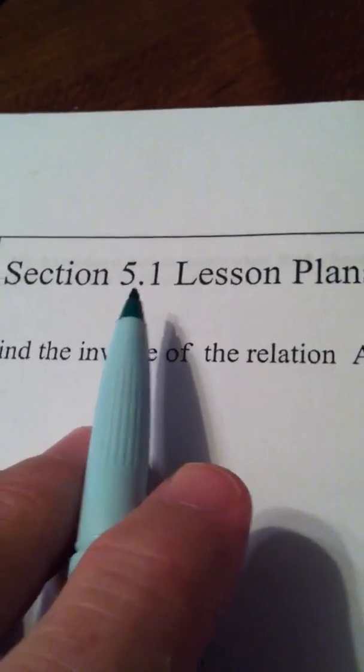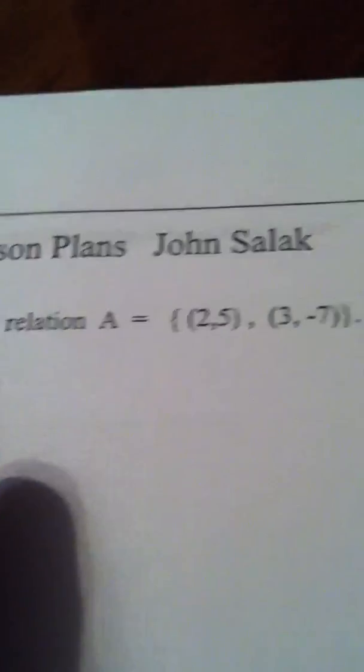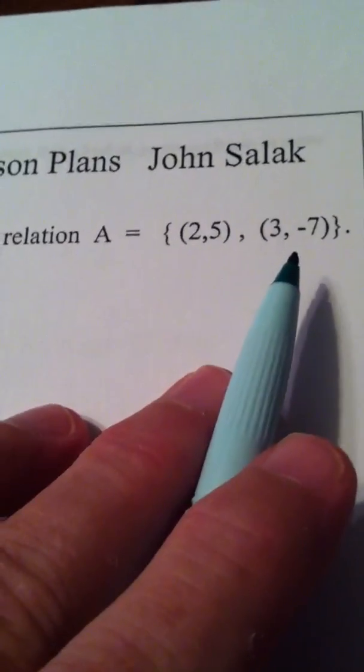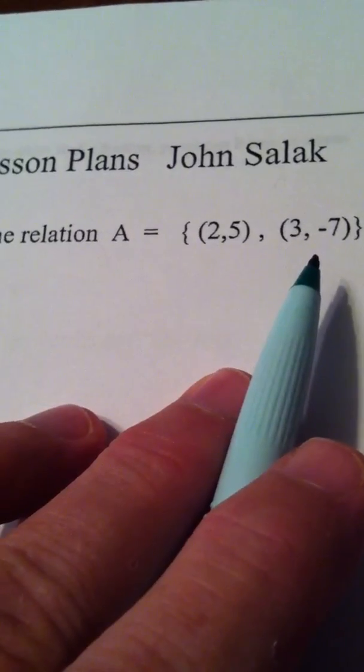Alright ladies and gentlemen, when we look at section 5.1 lesson plans, the very first question asks us to find the inverse of the relation A equals the ordered pair (2,5) and (3, negative 7).